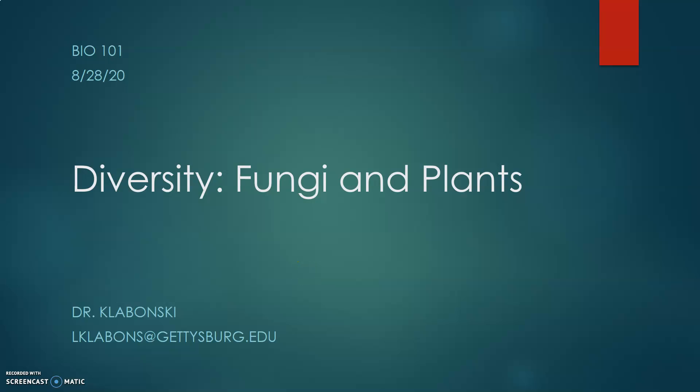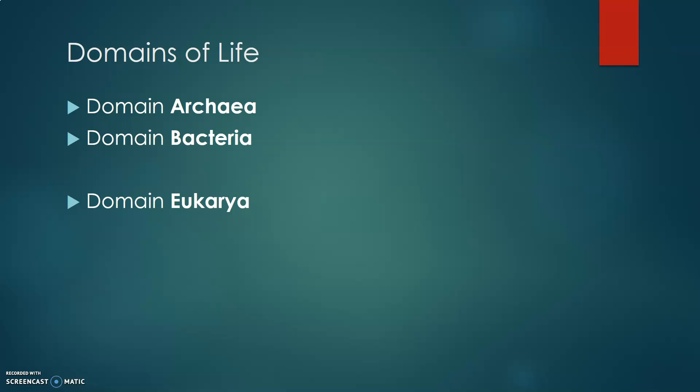This is the first part of a lecture on diversity in fungi and plants for Bio 101 from August 28, 2020. We've already talked about the two domains at the top of the slide — domain archaea and domain bacteria — and today we're going to move into talking about some of the kingdoms that fall into domain eukarya, or the eukaryotes, the organisms that have nuclei and organelles within their cells.